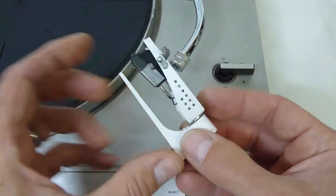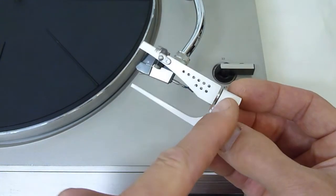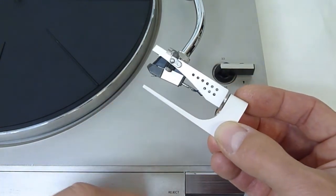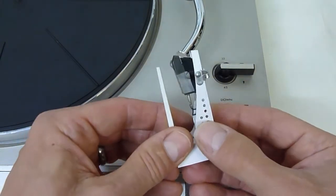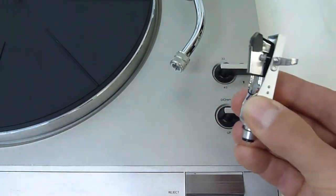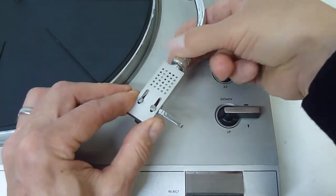If you don't have a gauge like this you can just measure the distance. From the collar to the stylus tip it should be 51 millimeters. Now we can pop this back on if it's aligned correctly.